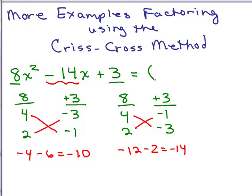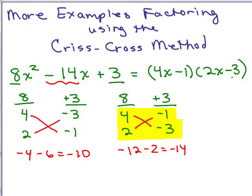So to factor it, this was the right combination. In one parenthesis is going to be 4x minus 1, the other 2x minus 3. So we write 4x minus 1 times 2x minus 3. Make sure you check your answer by doing the FOIL method or any other method for multiplying these two binomials and confirm you get 8x squared minus 14x plus 3.